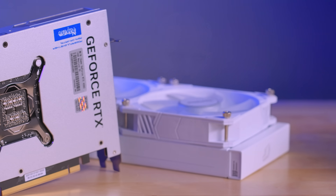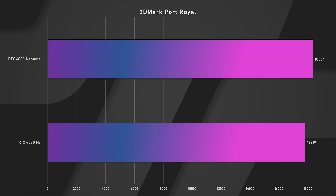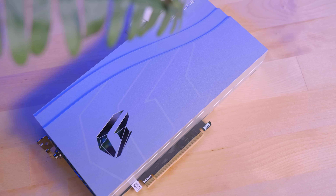I chose the Neptune because a water-cooled card gives us the biggest potential improvement over an air-cooled card. It also gives us the biggest price gap between the two cards — which, if it shows the performance isn't that far apart, only strengthens the position that custom high-end model cards are probably not worth it. In Port Royal, once you introduce RT, the spread is about the same: 18,354 versus 17,819. Both of these cards are going to be voltage-limited prior to being power-limited or temperature-limited. Custom cards sometimes only go 50 to 75 megahertz higher than the Founders Edition.